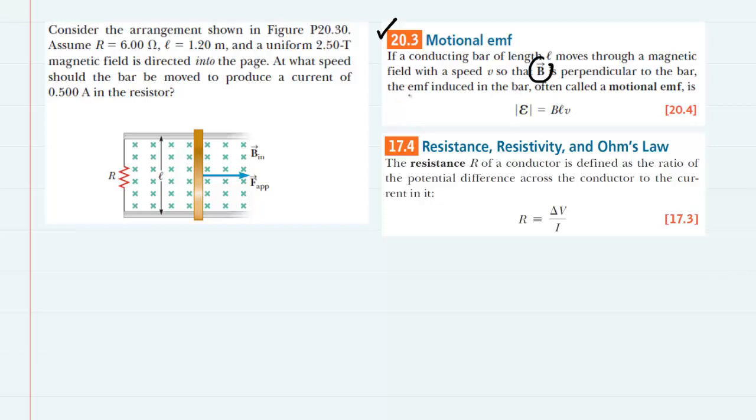Let's not forget that EMF is essentially the same thing as a potential difference that will develop across the ends of the bar as it slides through the magnetic field.